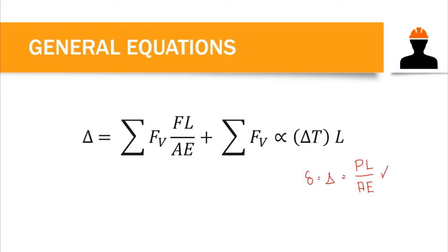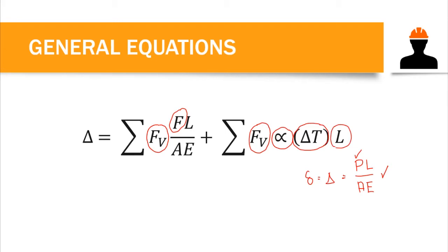We will be using this again in computing deflection of a truss because a truss is subjected to an actual load P. We have two actual loads: the load due to the virtual system and the load due to the real system. If we have a change in temperature, an increase in temperature causes an increase in the length of our member. We use the virtual system forces times the coefficient of thermal expansion times the change in temperature times the original length. If we do not have a change in temperature, we can simply cancel that term out.